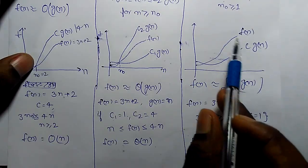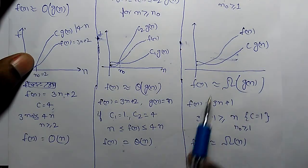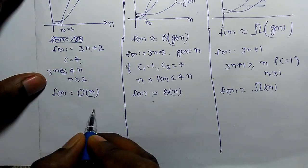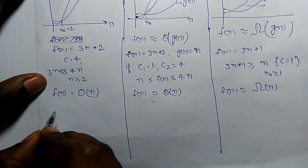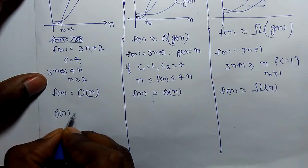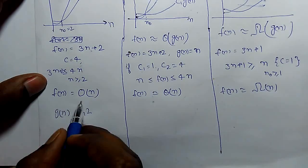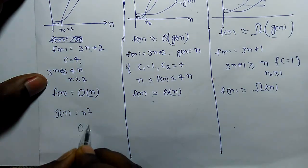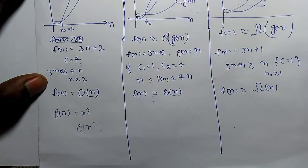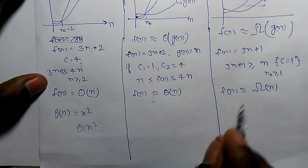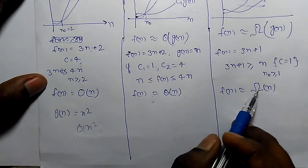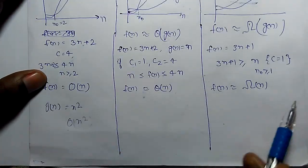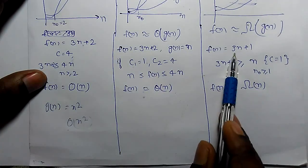So least lower bounded value is N. That's why it is Omega N. In the last class we have also said that G of N can be taken for N squared. Then also condition will be true. It means for 3N plus 2, Big O notation N squared is also possible. But we take least upper bound value. Similarly here we take closest lower bounded value for F of N. So Omega N is correct answer for 3N plus 1. We can also take log N.